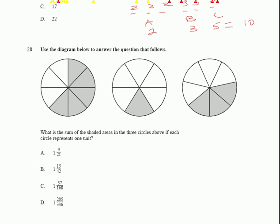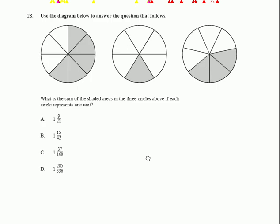Okay, let's do question 28 together now. What you see is really just a fraction question, nothing more than that. If we read the question first, you can see down below it says what is the sum of the shaded areas in the three circles above if each circle represents one unit.